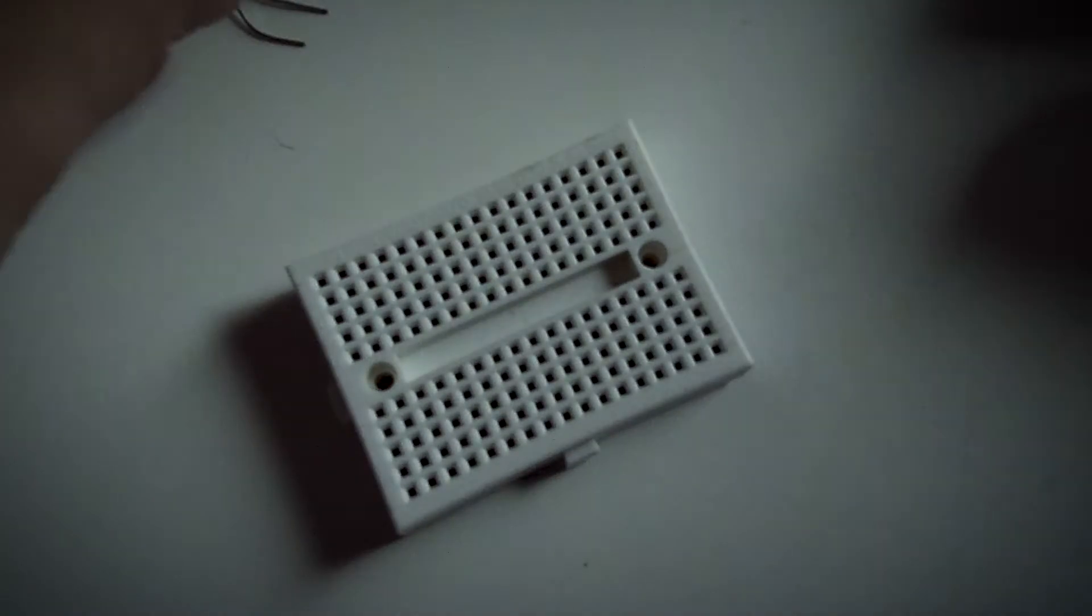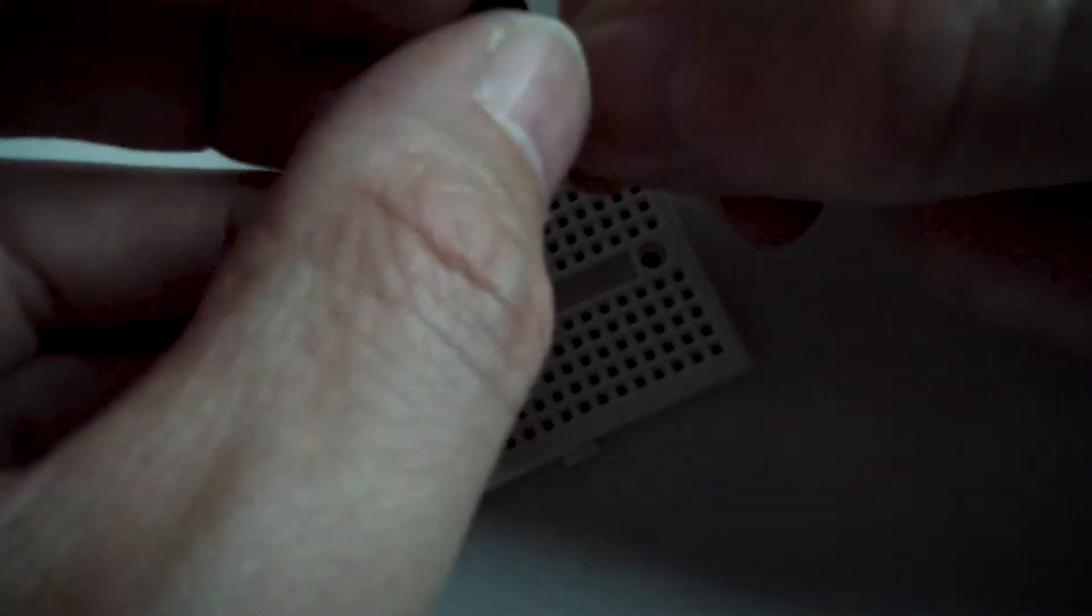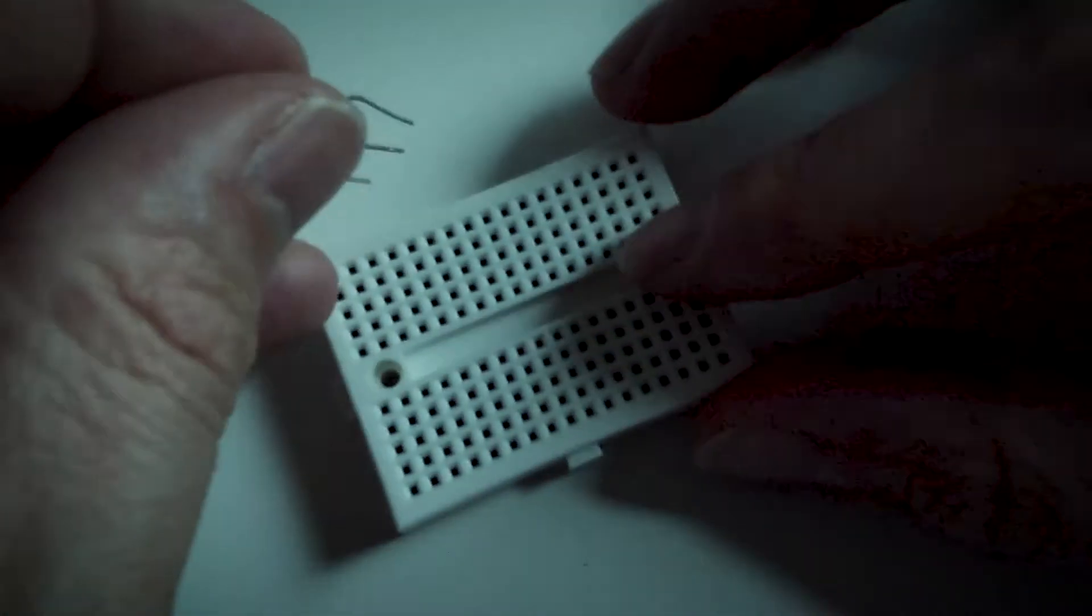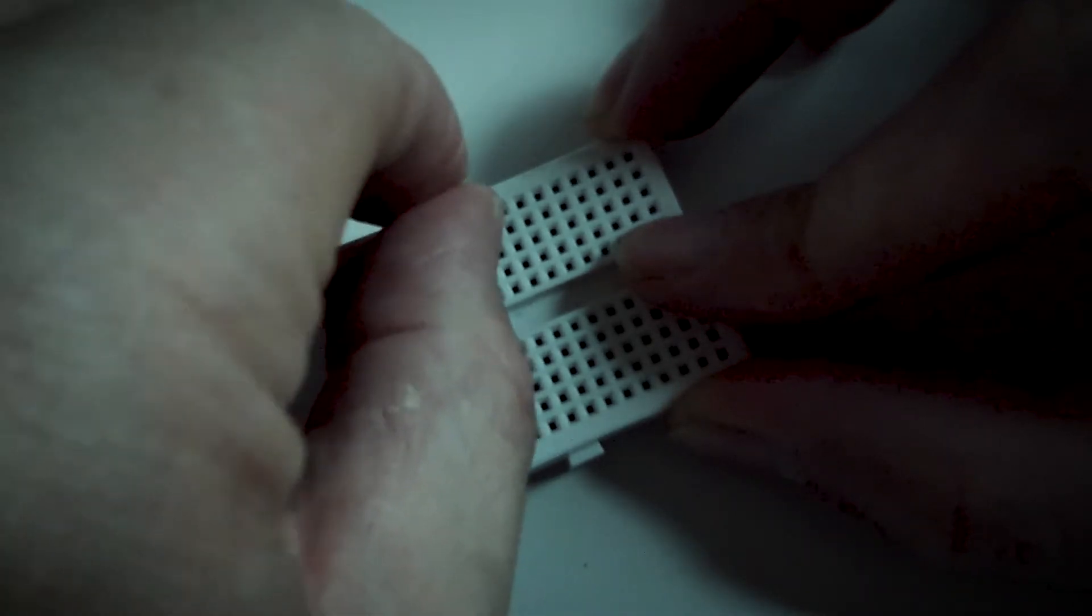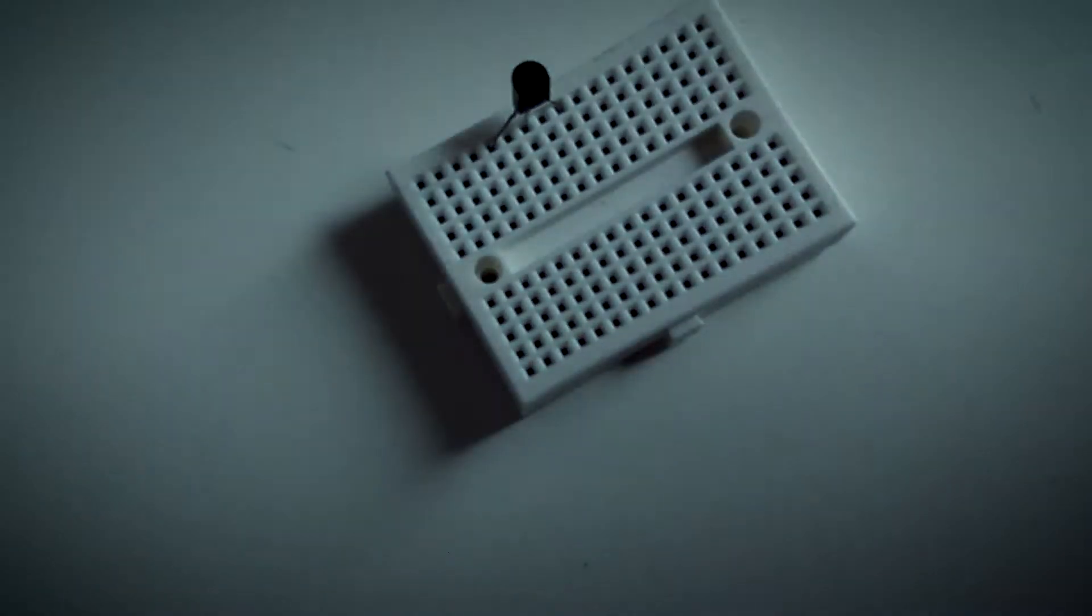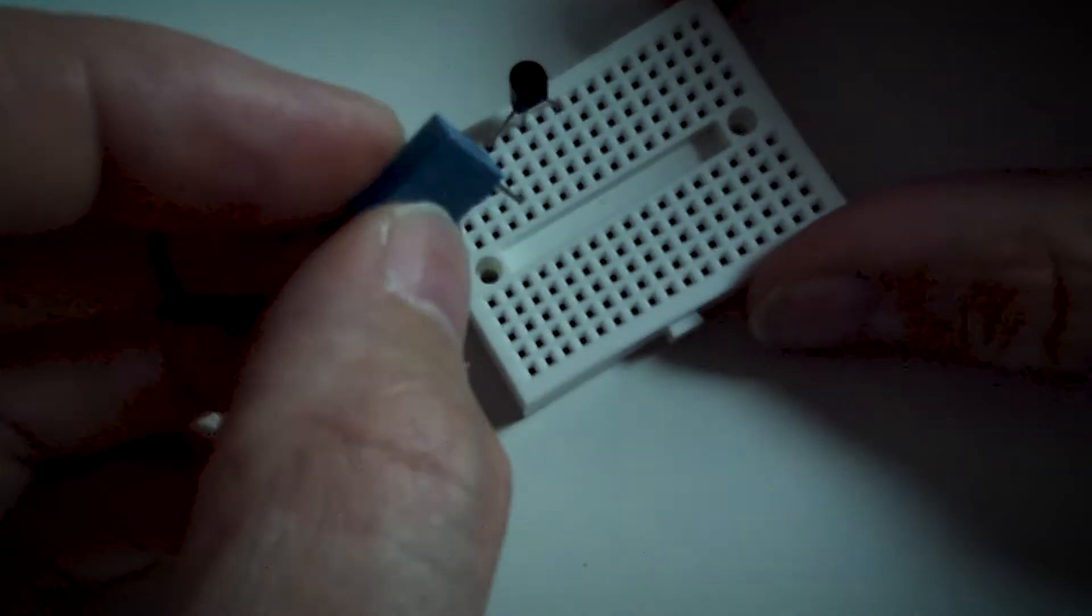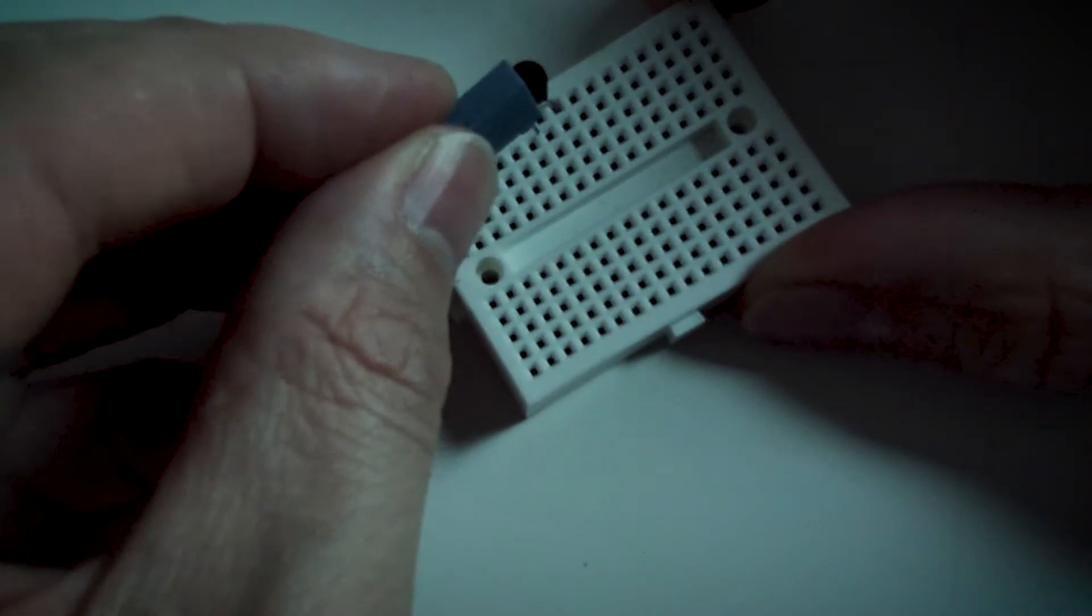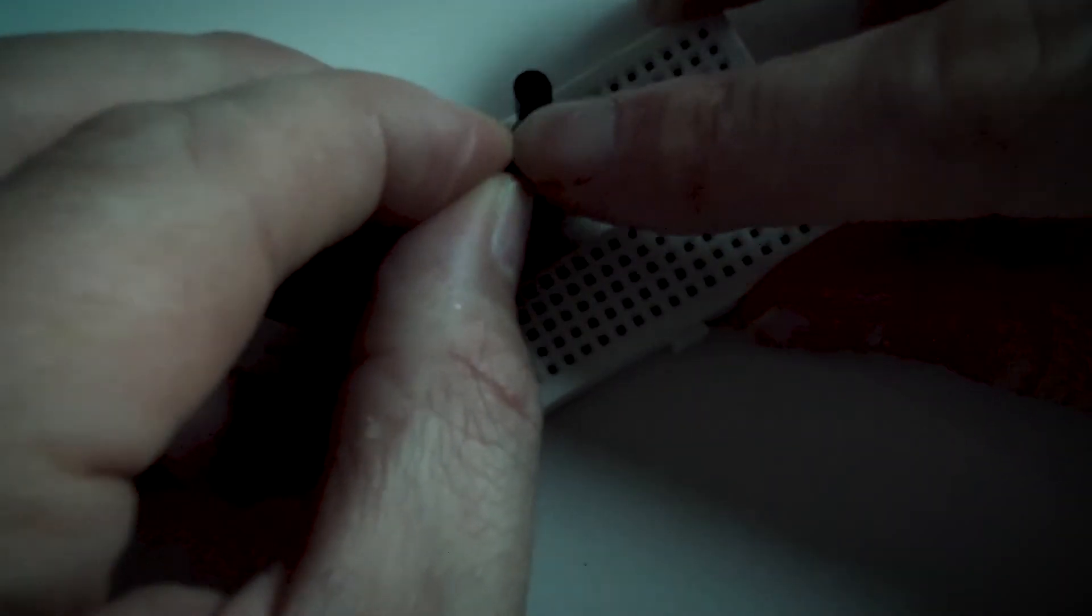Okay, so first I'm going to get the transistor. You want the flat side - because it's got a flat and a rounded side - put the flat side into the breadboard. Then I'm going to get the 2.2 microfarad capacitor. That's going to go from the middle leg of the transistor and eventually go to the input.